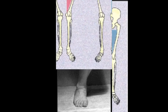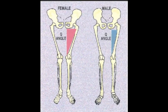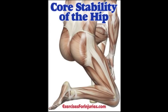Females tend to naturally be more prone to being in this position due to their wider hips. The femur ends up being more slanted towards midline than in men. This can be changed by increasing strength at the hip and improving the alignment of the lower extremity.